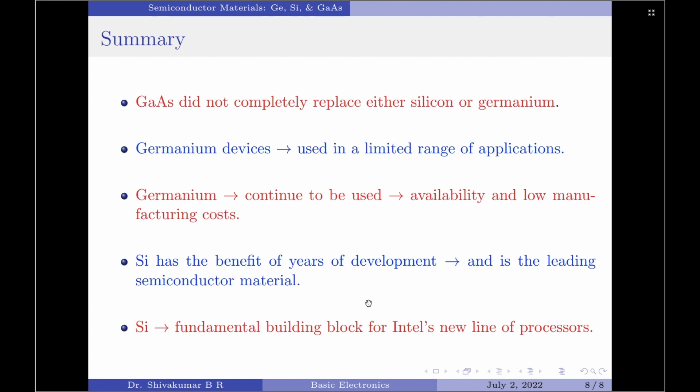Well, that is about this discussion on semiconductor materials. In my next video, I will discuss the Bohr's model for silicon, germanium, as well as gallium arsenide. And I will also discuss the covalent bonding and the bonding structure for the same. So, stay tuned.